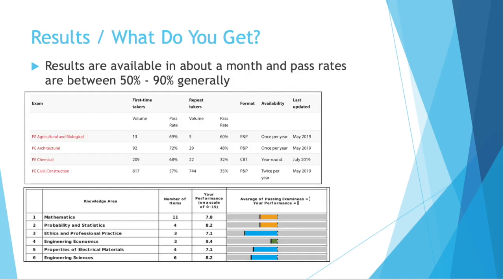Your results will be available in about a month, and pass rates are generally anywhere between 50 and 90%. The results graphic breaks it out into each category of exam question, with a bar graph on the right showing where the average score was and how you compare. You can also see the number of questions in each category — they aren't spread evenly. In this example screenshot, mathematics had 11 questions, whereas engineering economics just had 3.